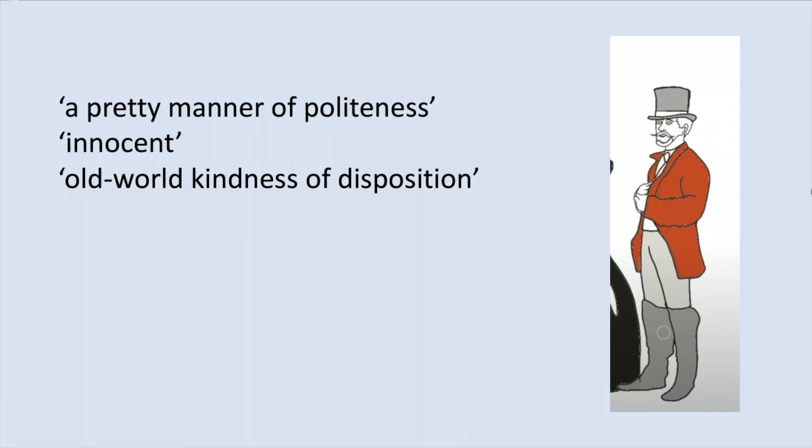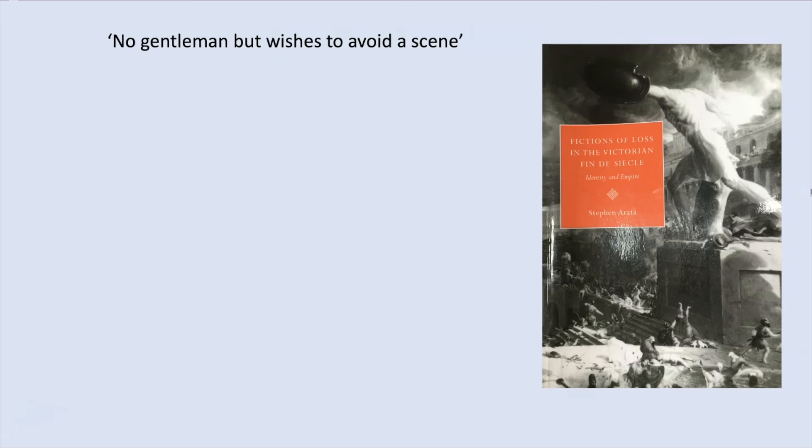If we interpret Hyde as an animalistic, devolved, lower-class villain, there are numerous parts of the text that refuse to fit into this interpretation. For starters, Hyde views himself as a gentleman. When apprehended for the trampling of the child in the opening chapter, Hyde states: 'No gentleman but wishes to avoid a scene.' As Steven Arata points out in his book Fiction of Loss, Identity and Empire, the noun 'gentleman' is the word most frequently used to describe Hyde in the novella. This is just one way in which Stevenson hints at the idea of Hyde representing the middle and upper classes.